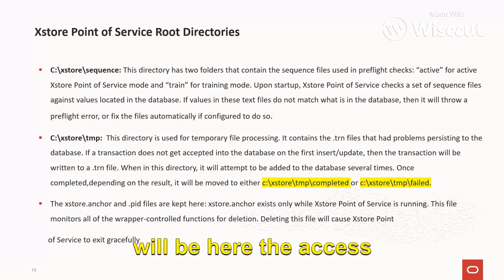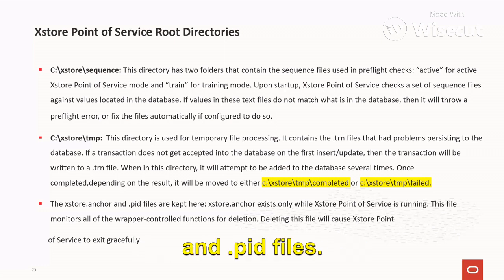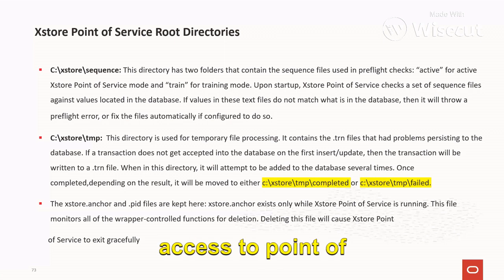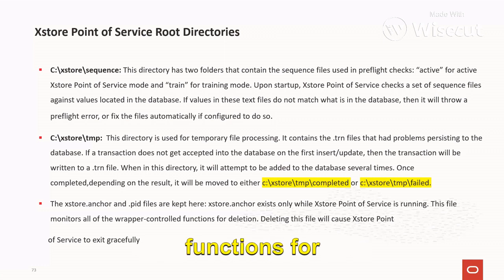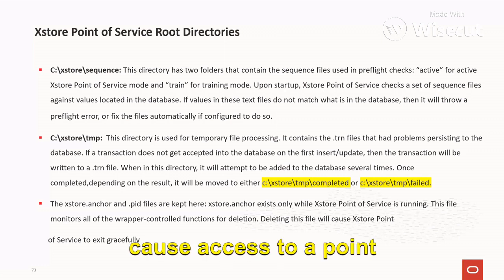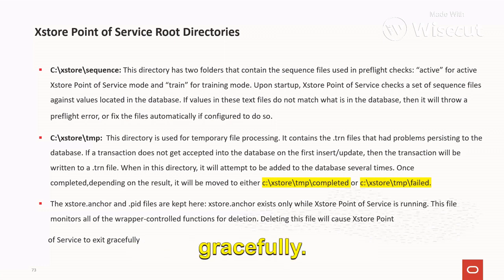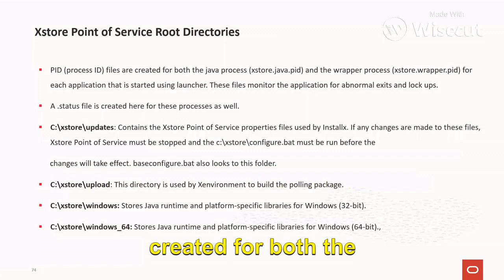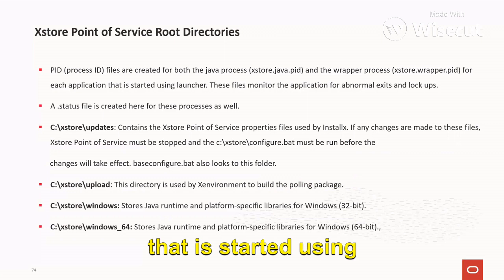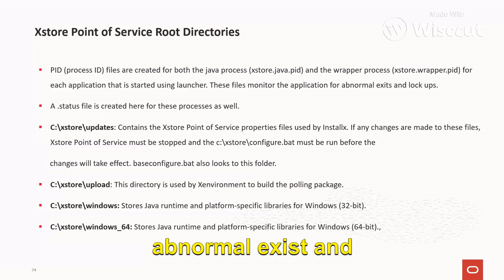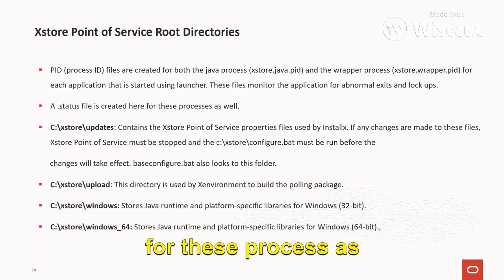Another important files here are the accessstore.anchor and .pid files. The accessstore.anchor exists only while Access Store point of service is running — this file monitors all of the wrapper control functions for deletion. Deleting this file will cause Access Store point of service to exit gracefully. Process ID (.pid) files are created for both the Java process and the wrapper process for each application started using the launcher. These files monitor the application for abnormal exits and lockups. A .status file is also created here for this process as well.